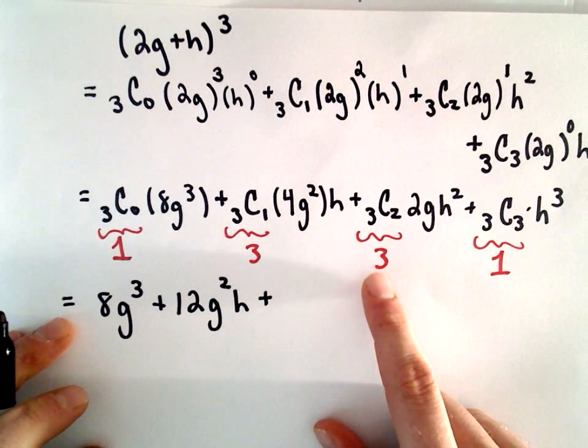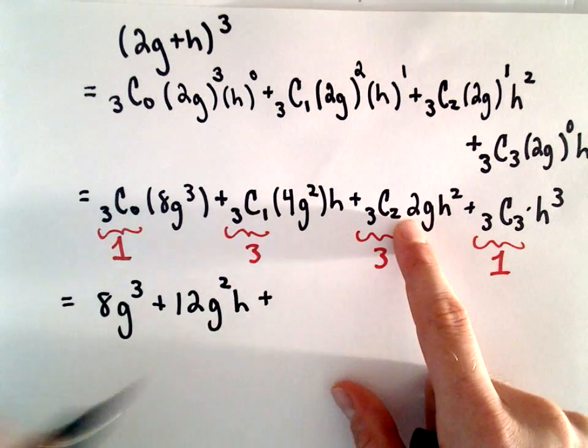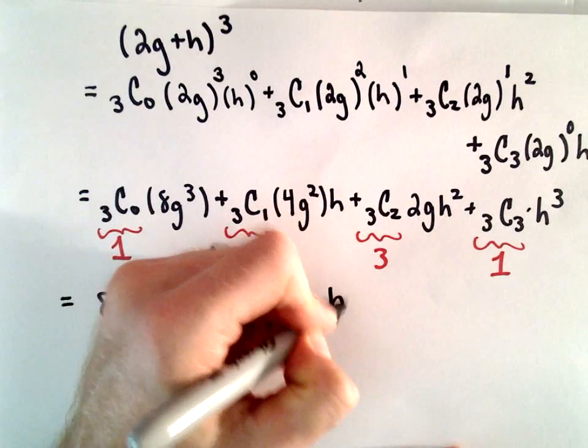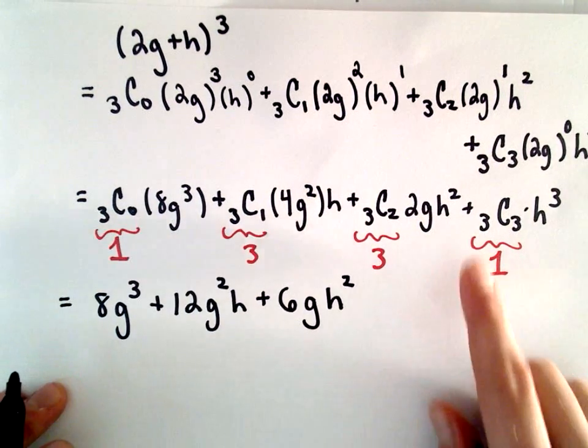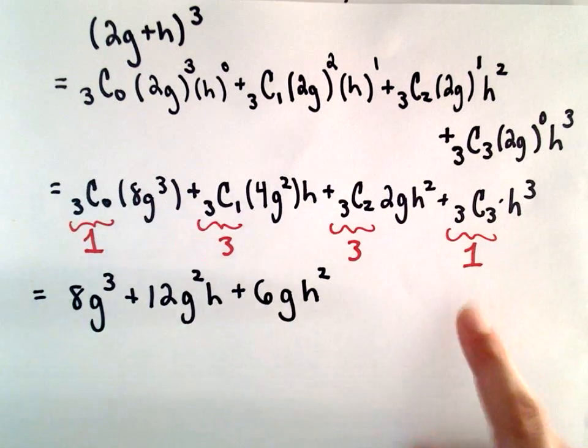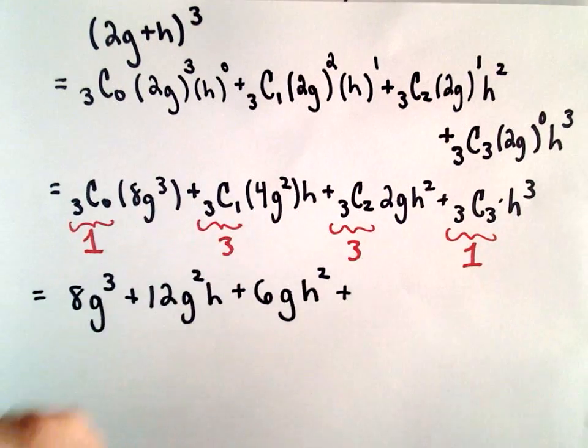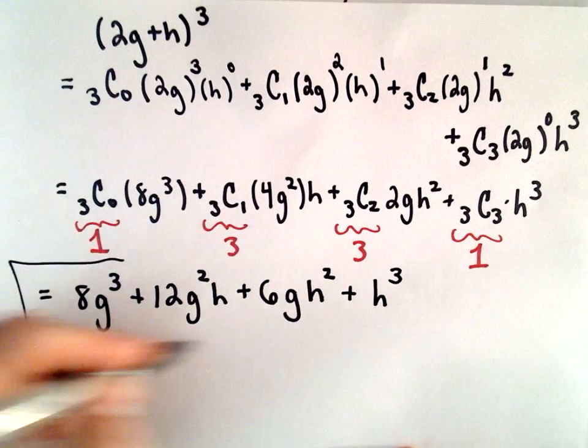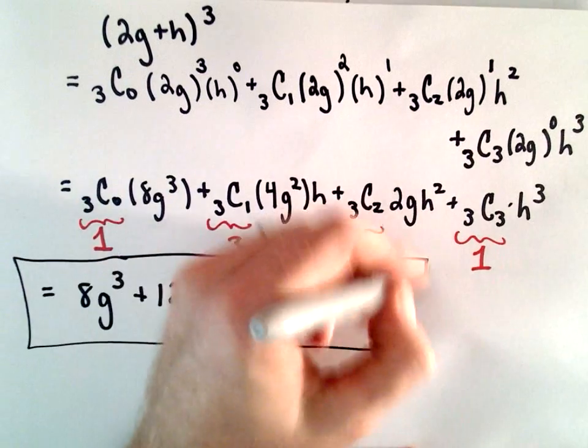Plus, we've got 3 multiplied by 2, which will be 6. Then we have a g and an h squared. And last but not least, we've got our 3 choose 3. That's going to be just equal to 1 multiplied by h to the third. So that will now be our expanded expression.